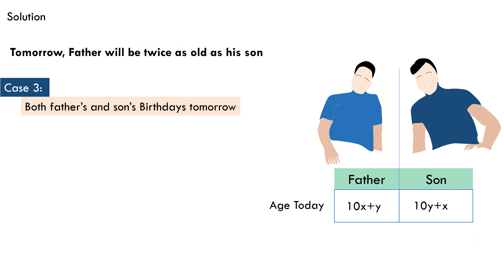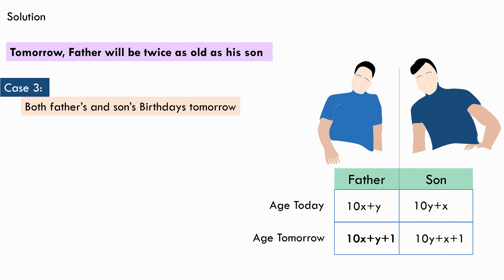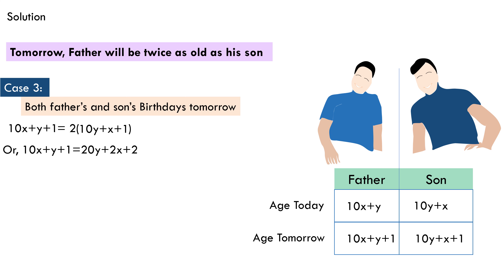For Case 3, suppose it's both their birthdays tomorrow. The father will be 10x plus y plus 1 and the son will be 10y plus x plus 1 tomorrow. Equating the father's age to twice his son's age gives: 10x plus y plus 1 equals 2 times (10y plus x plus 1), which simplifies to 8x minus 1 equals 19y. We find that no integer values of x and y satisfy this equation, so this case yields no valid solution.